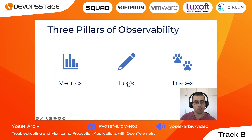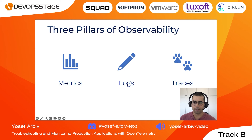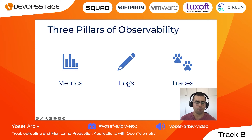To deal with those challenges, we have the three pillars of observability that most frameworks and utilities for observability use: metrics, logs, and traces. Metrics are essentially numbers over a timeline. Metrics tell us what is happening in our system — how many transactions do we have, what is the duration of those transactions, how many errors do we have, and so on.